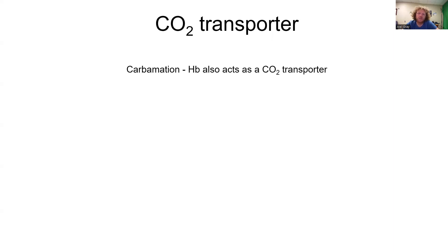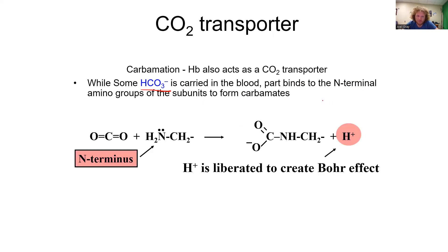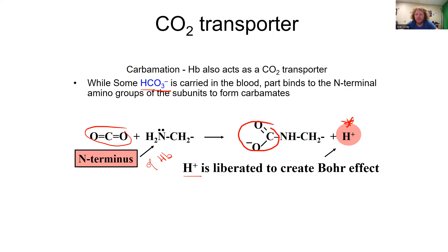CO2 is also transported through a mechanism known as carbamation. Hemoglobin acts as a CO2 transporter. While some HCO3- is carried in the blood, part of the CO2 binds to the N-terminal amino groups of the subunits to form carbamates. The N-terminal of hemoglobin reacts with CO2, releasing a proton — which again augments the Bohr effect — and the CO2 attaches to the N-terminal. This is known as carbamation.